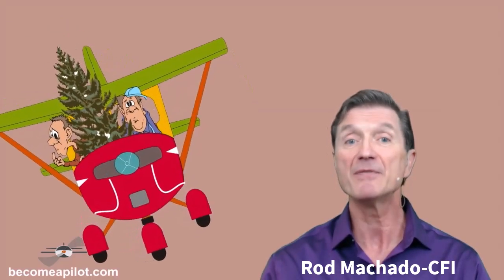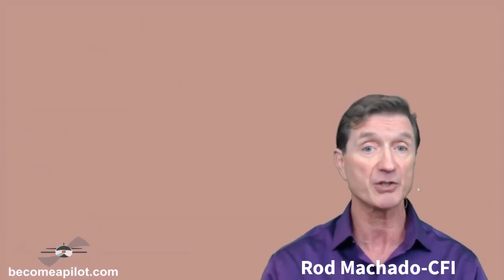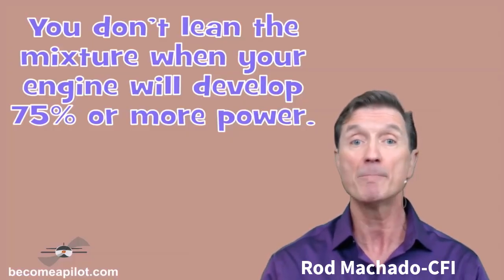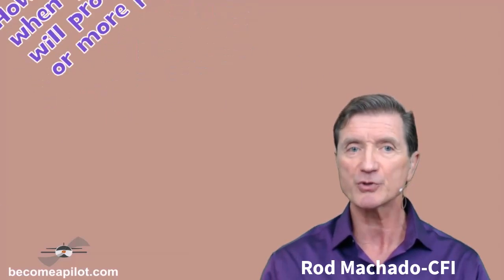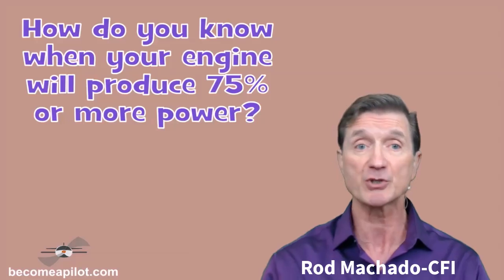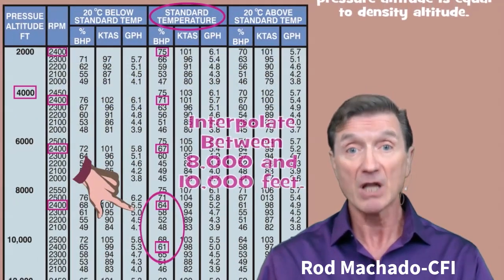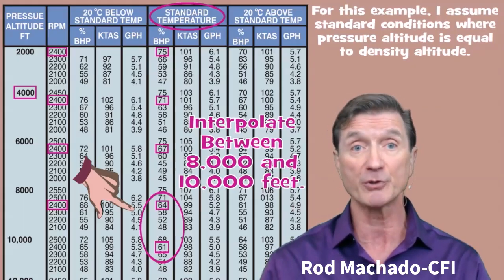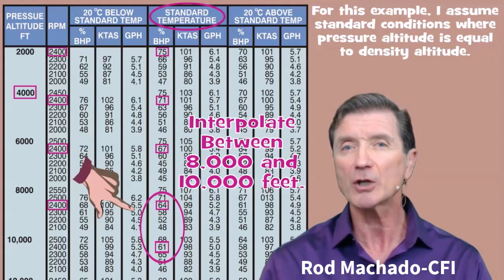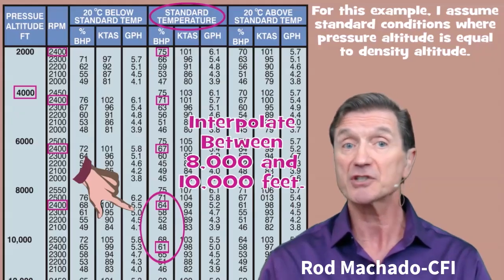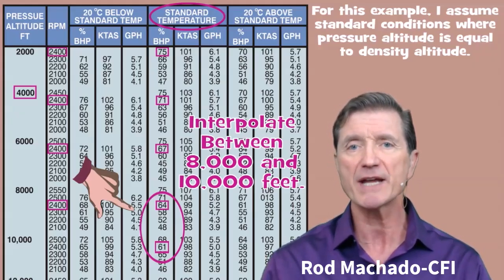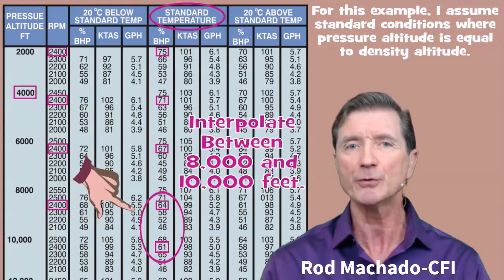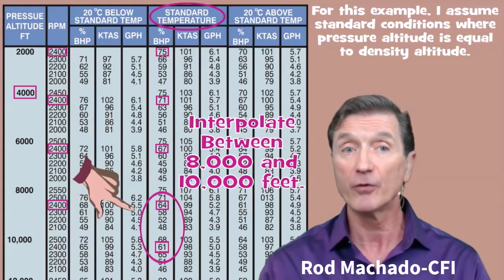So here's the rule — and keep in mind that this is a generalization, but it works pretty well for the typical general aviation airplane. You don't lean the mixture when your engine will develop 75% or more power. How do you know when your engine will produce more than 75% power? You look at your performance charts. In the example above, with a 9,000-foot-plus density altitude, the 165-horsepower Stinson engine is probably, if properly leaned, producing 60–65% of its rated power. Since detonation rarely occurs below power levels of 70%, there's little chance of detonation, so the pilot should have leaned the mixture for takeoff — especially since the Stinson's fuel enrichment valve is pumping an extra 15% of fuel into the carburetor's throat with the throttle in its full forward position.